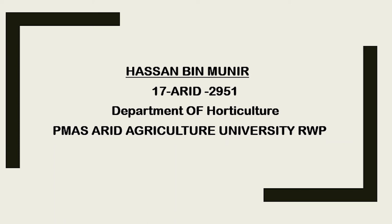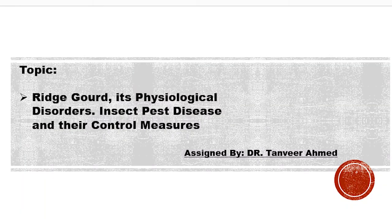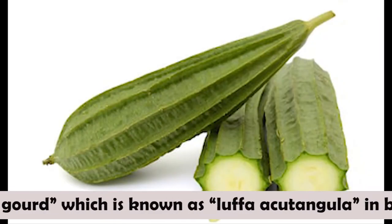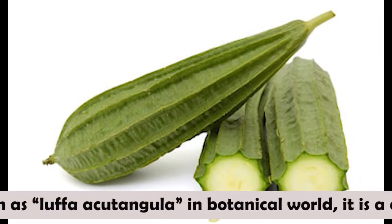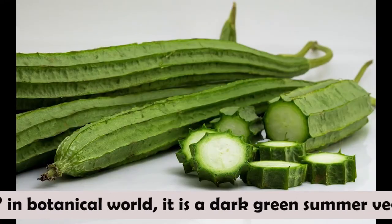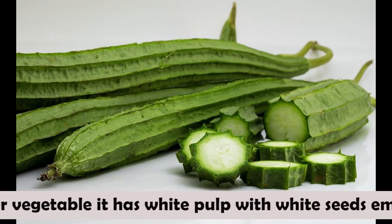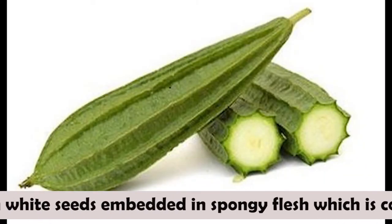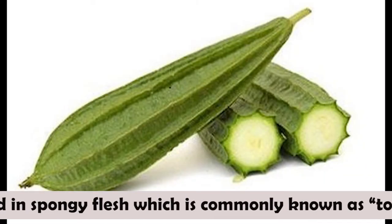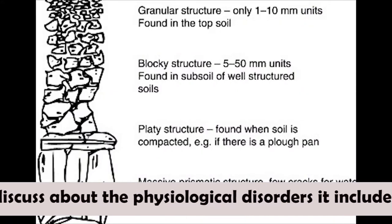Assalamu alaikum, my name is Hassan bin Murray. Today I am going to discuss about ridge gourd — its physiological disorders, insect pests, diseases, and their control. This was assigned by Dr. Tanweer Ahmed, Department of Horticulture, Arid Agriculture University, Rawalpindi. Ridge gourd, known as Luffa acutangula in the botanical world, is a dark green summer vegetable with white pulp and white seeds embedded in spongy flesh, commonly known as tori.